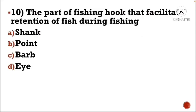Next question: The part of a fishing hook that facilitates retention of fish during fishing — Option A: shank, Option B: point, Option C: barb, Option D: eye. The correct answer is Option C, barb.